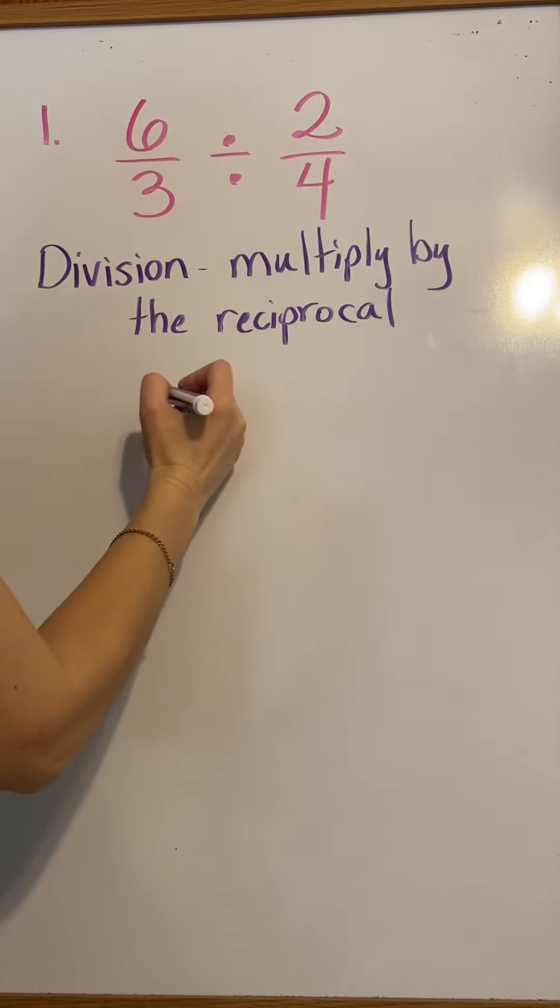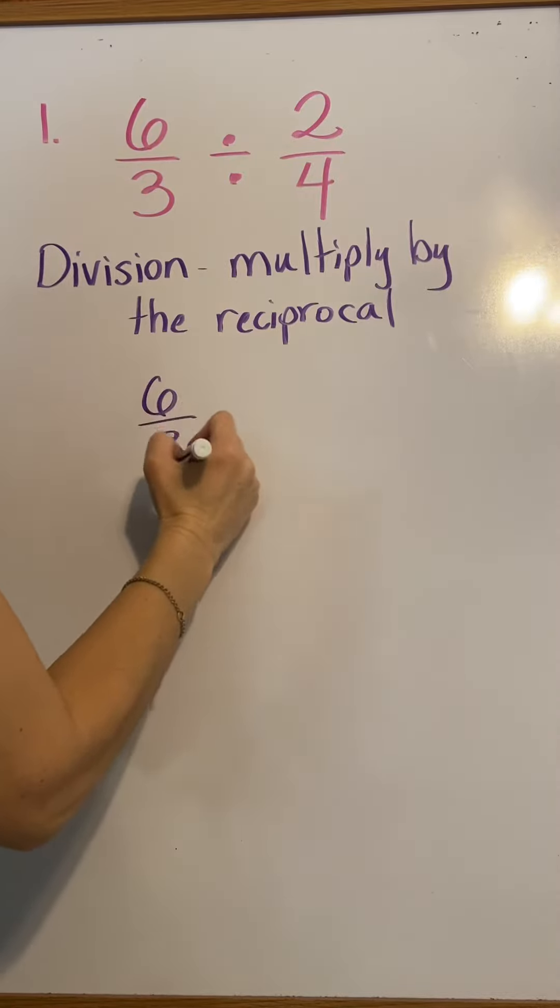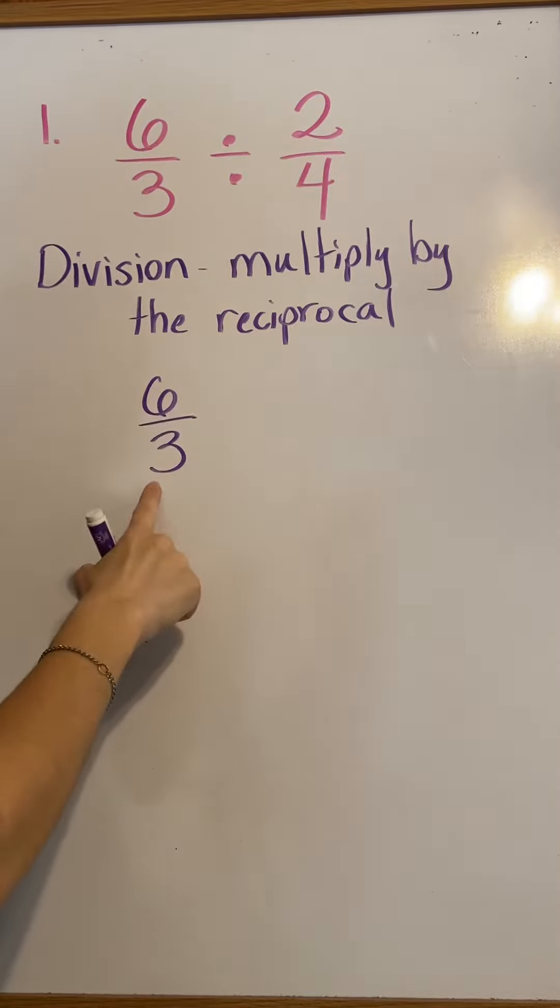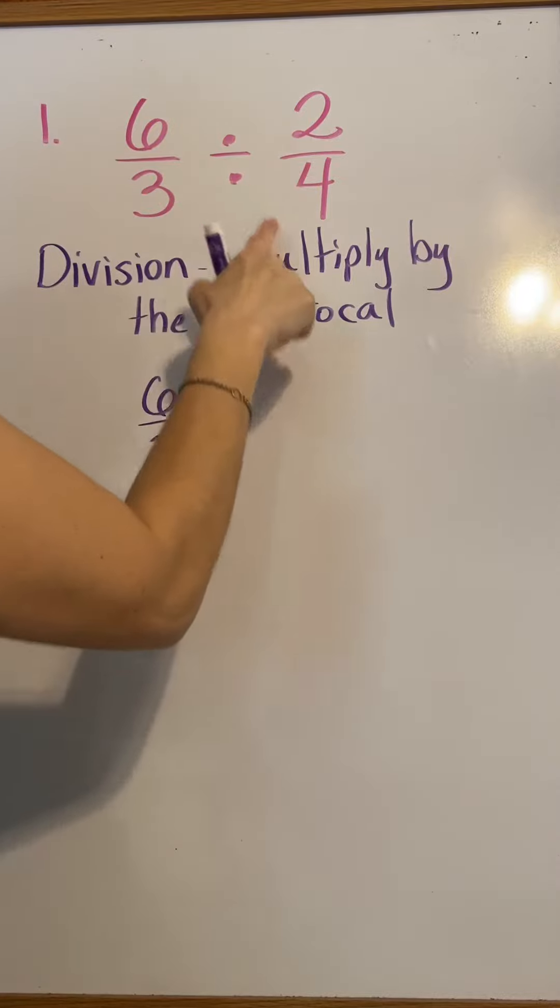We take the first fraction and keep it the same, 6 over 3. Keep that the same. Then, instead of dividing, we're going to multiply.